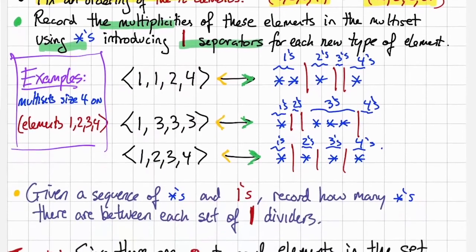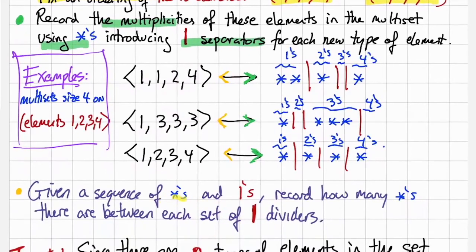We can see how to go backwards, too. Let's say we have a sequence of stars and bars. We can determine the corresponding multiset by recording how many stars there are between each set of dividers. If we have star, star, bar, star, bar, bar, star, there must be 2 1s, 1 2, no 3s, and 1 4, which would give us this multiset.